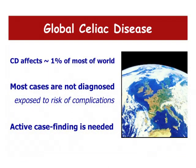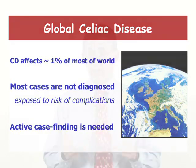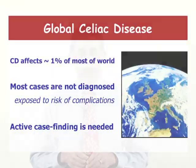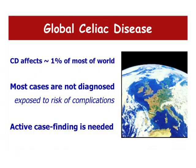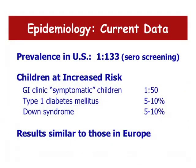Celiac disease is found in pretty much all parts of the world. In our country, as is true for many countries, the prevalence is about one in a hundred — about one percent of the population. Even in the United States, where we have a lot of technology and the ability to make diagnoses, only about five percent of people in our country have actually been diagnosed.